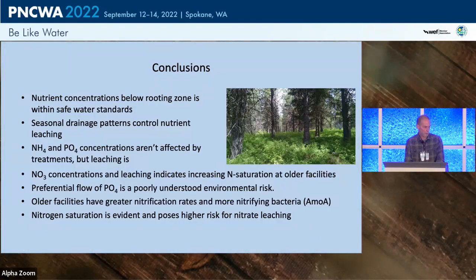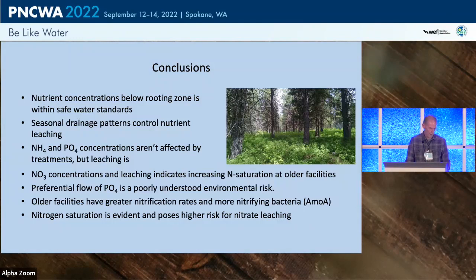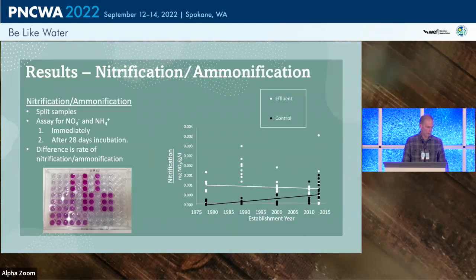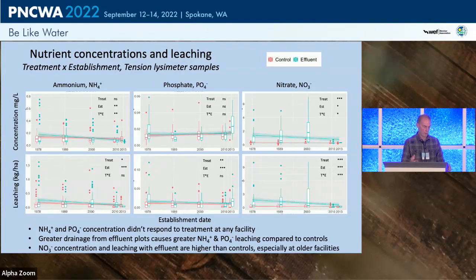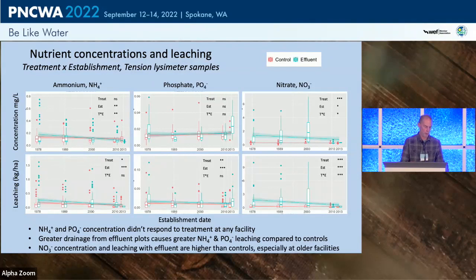In conclusions: nutrient concentrations below the rooting zone are well within safe water standards. Phosphate concentrations coming out the bottom of the rooting zone are very low compared to the 1 mg/L surface water standard, and nitrate filtering from these forests is well below the 10 mg/L drinking water standard.